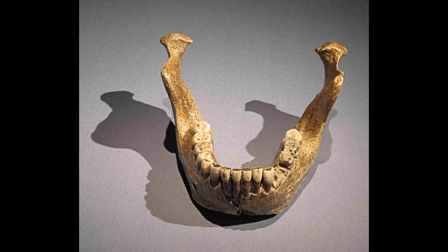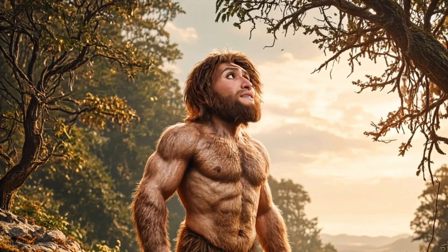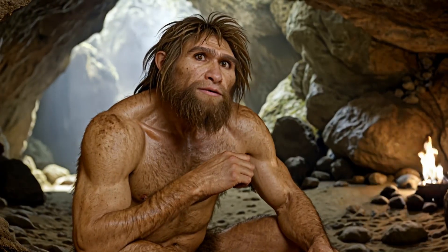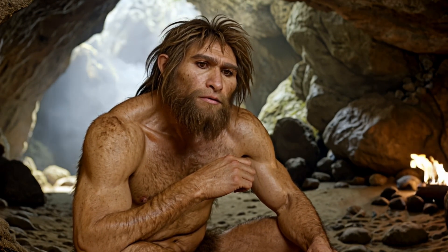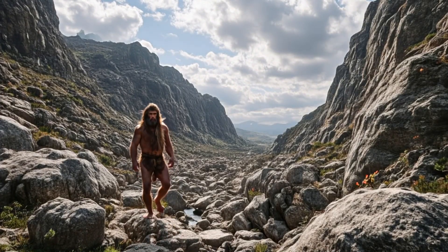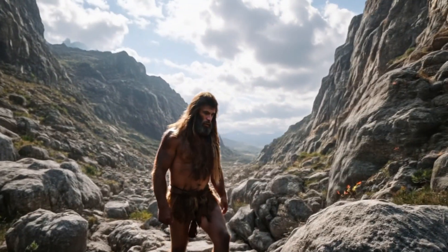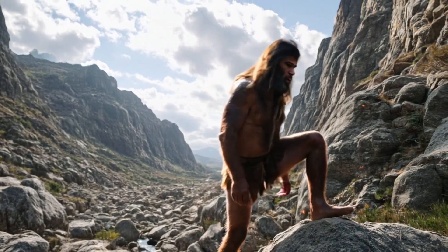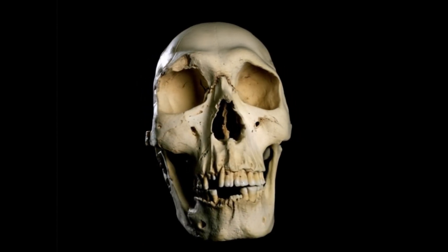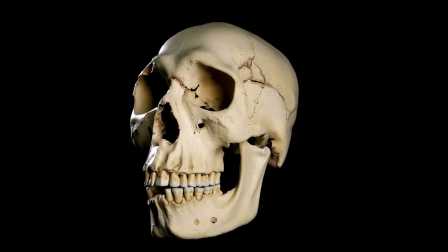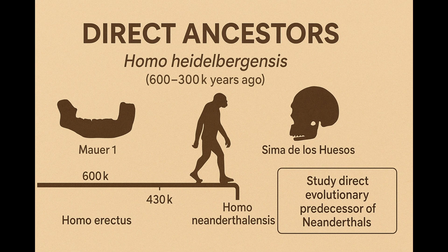Based on the latest finds, the European populations of Homo heidelbergensis can even be regarded as early Neanderthals, as they already exhibit characteristic Neanderthal features. An example of this is the population from the Sima de los Huesos Cave, Atapuerca, in Spain, which is about 430,000 years old, and can be considered the predecessor of the Neanderthals from an anatomical perspective. On the dentition and skeletal remains of these fossils, classic Neanderthal traits can also be observed, indicating that the Neanderthal lineage had been evolving in isolation for a long time.